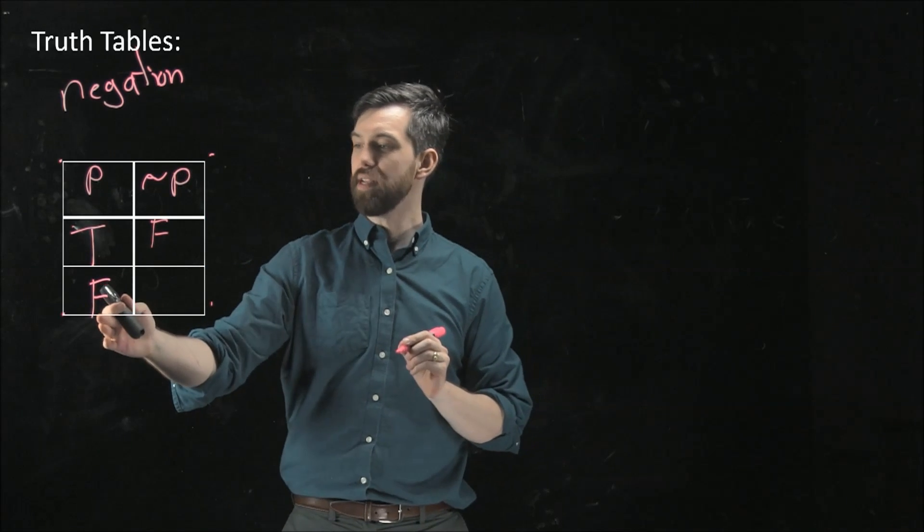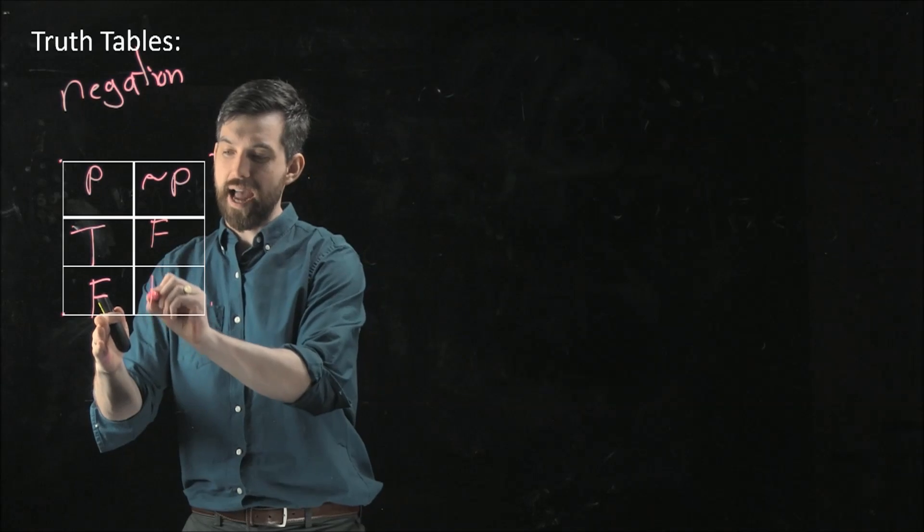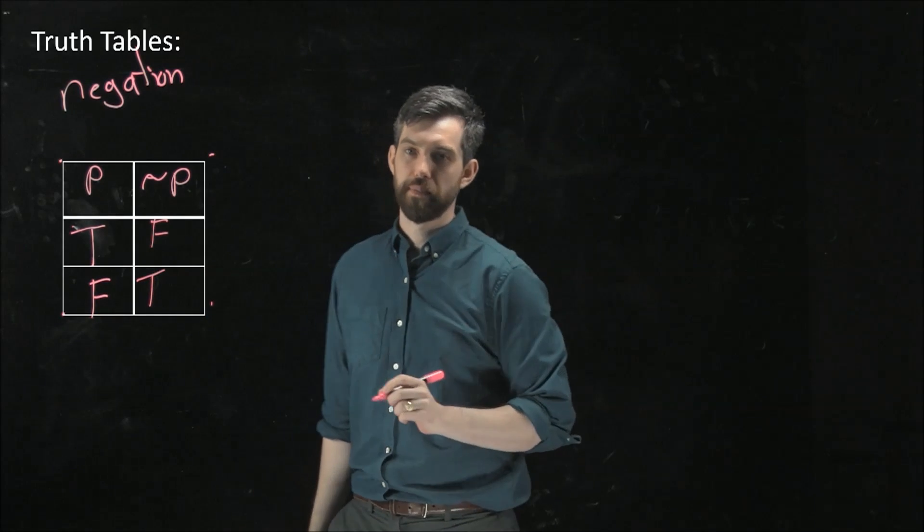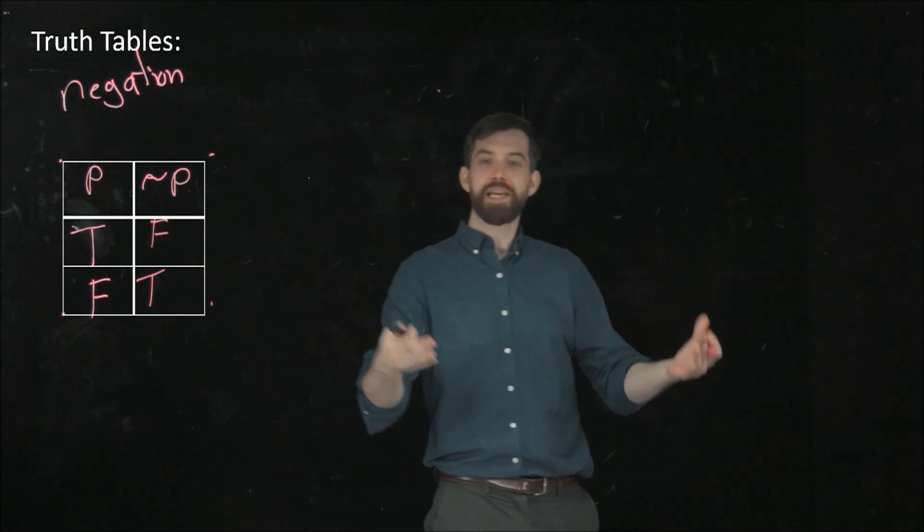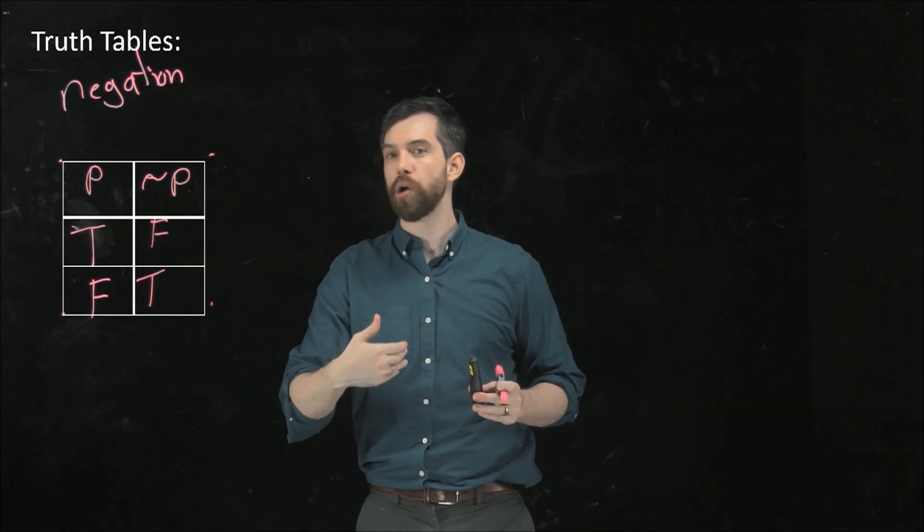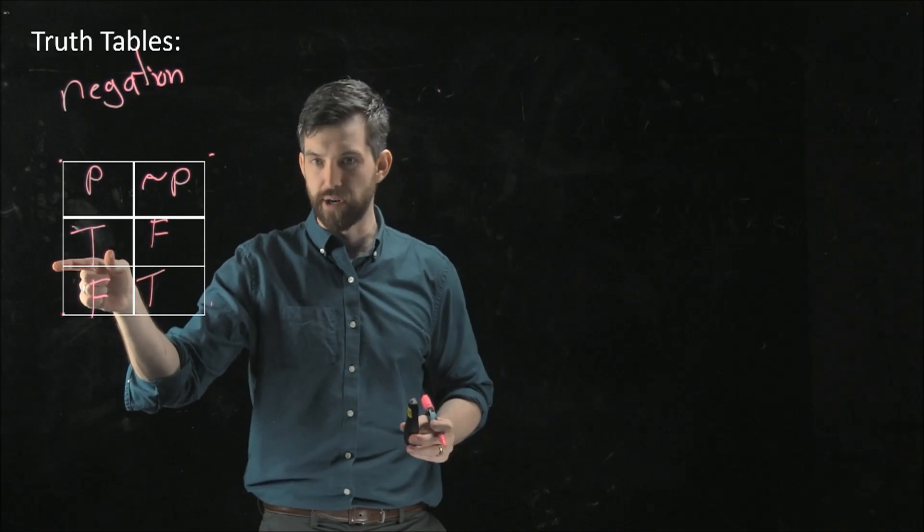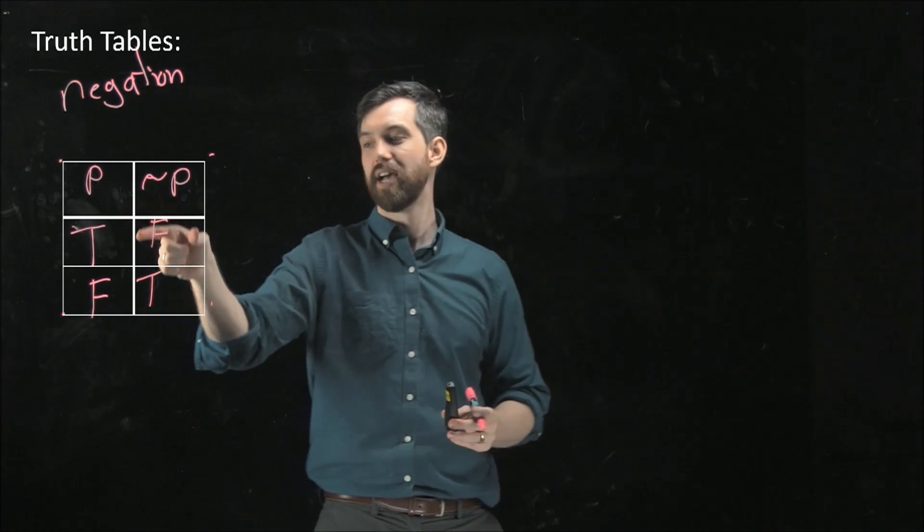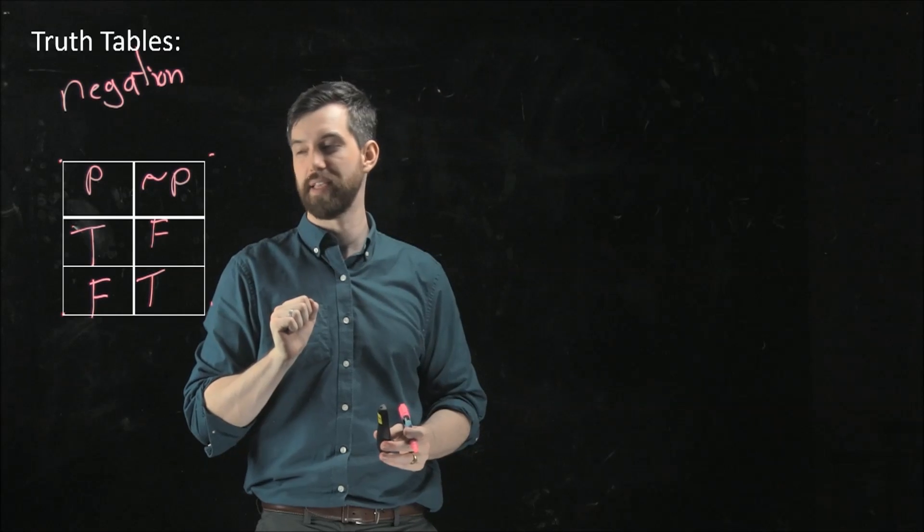And if my statement is false, then negating that must be true. So for example, back when p was my shirt is blue, sometimes I wear a blue shirt, sometimes I don't. So when I wear a blue shirt, if I negate that, I'm always going to have the answer that this is false.